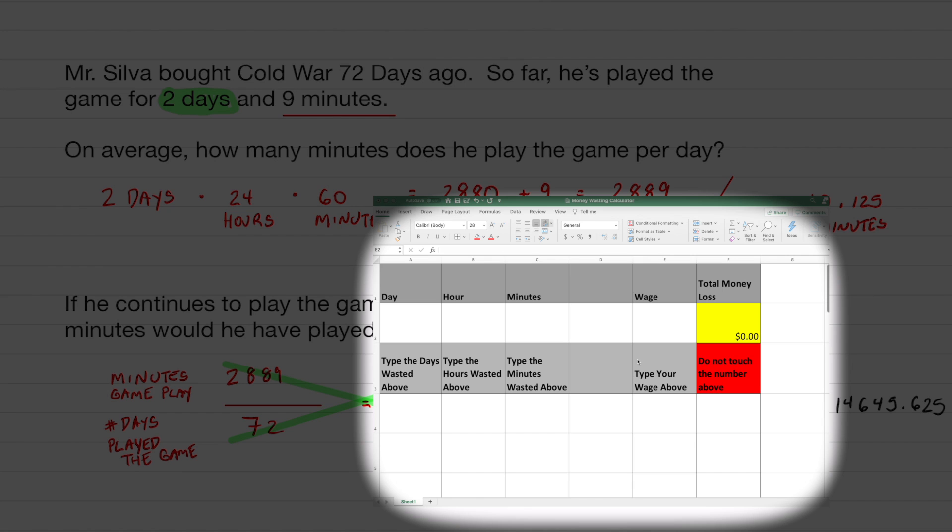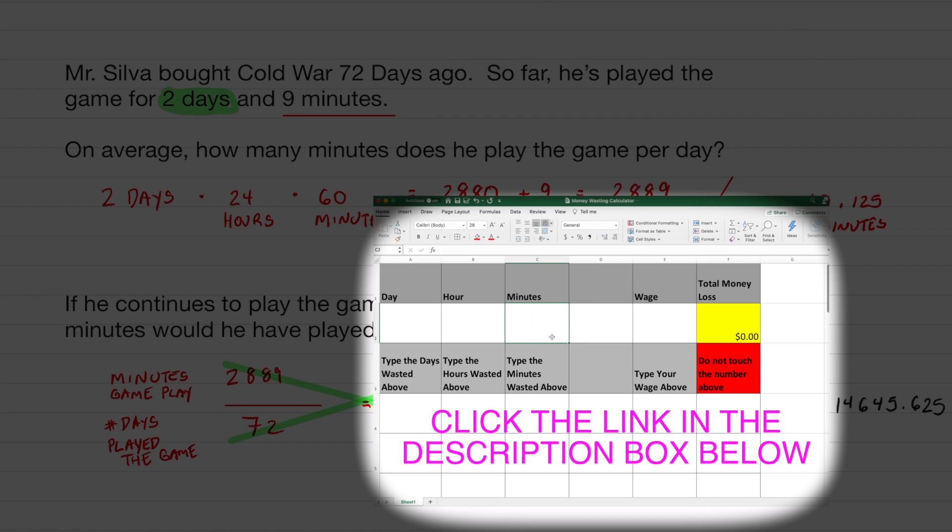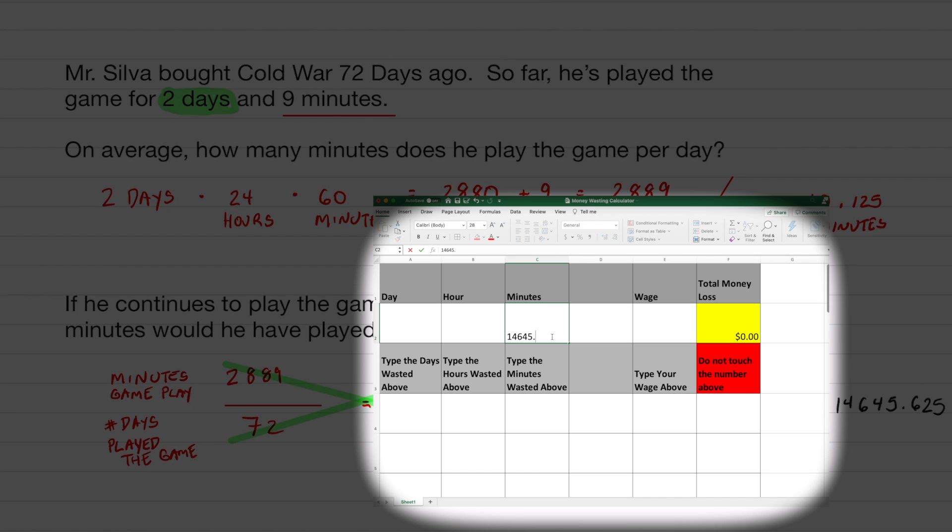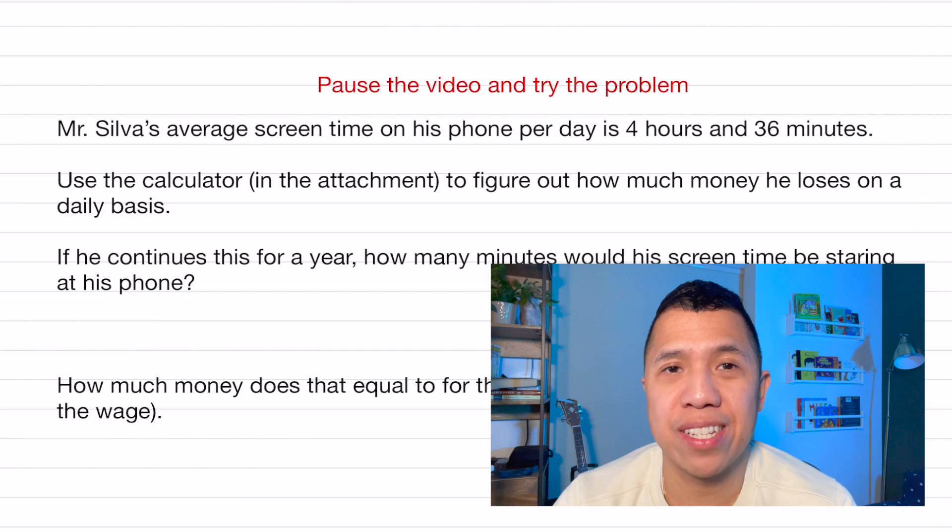Let me show you how my money wasting calculator works. You can access this for free and calculate stuff for fun. But let's say I type in my projected yearly minutes that I would have played Call of Duty. 14,645.625 minutes. You're going to type that there. And this box for wage, you can actually put whatever wage you want to put. Let's just pretend we're doing $15 for minimum wage. That equates to $3,661.41. Wow. I'm really embarrassed to share this statistics.